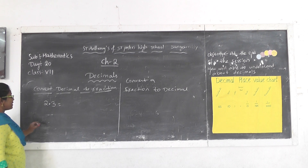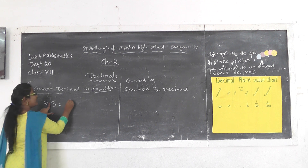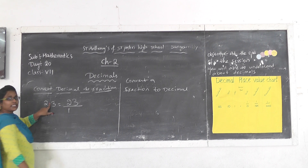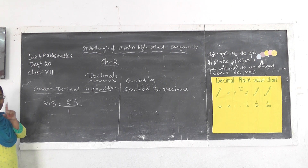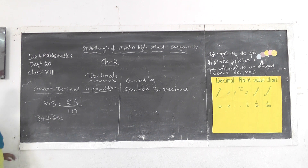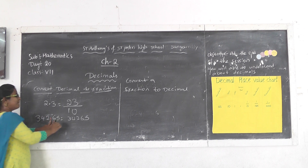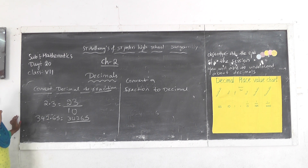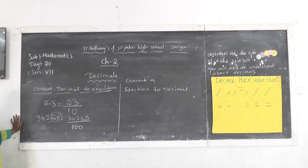So 2.3 — first, I will explain an easy method. If you remove the point, what is the number? 23. Write 23 in the numerator's place. You have to start from 1 — after the point, how many numbers are there in the decimal part? Only one number, so we write 10 in the denominator. So 2.3 = 23/10. Let me take one more example: 342.65. After removing the point, the number is 34265. In the decimal part there are 2 numbers, so we write 100 in the denominator.